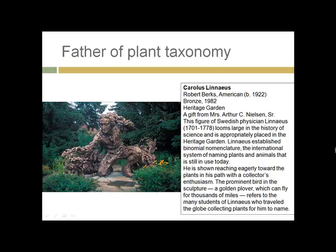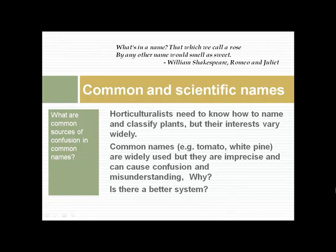Here he is again — Linnaeus, eagerly reaching toward the plants in his path with a collector's enthusiasm. He lived in the 1700s but was a huge figure who made many contributions. His most important and enduring contribution was establishing the use of Latin and binomial nomenclature — a Latin term for the genus and the species of each plant. Now we have over 450,000 plants classified according to his system, and it has stood up to the test of time for plants and animals for over 200 years.